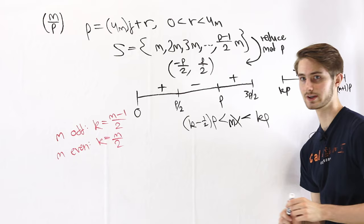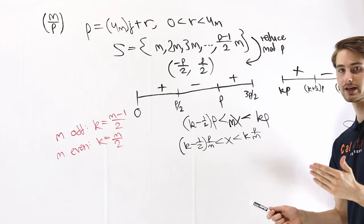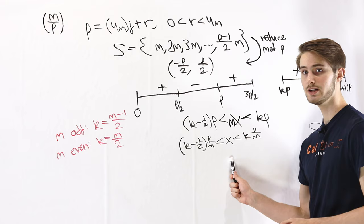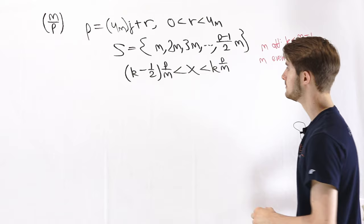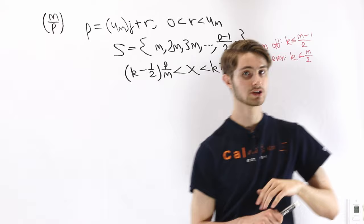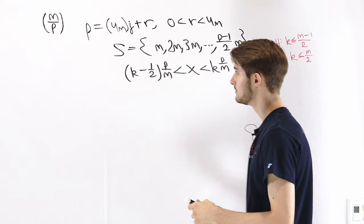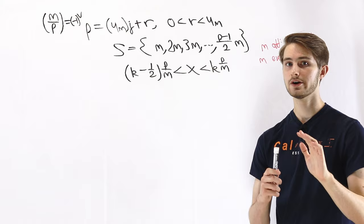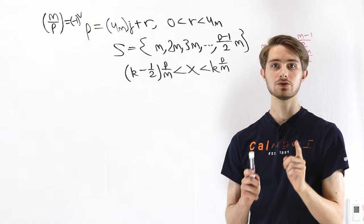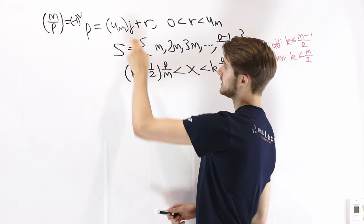Using Gauss's Lemma, whether m is a quadratic residue mod p depends on the number of integers x in a range for k between 1 and the upper bound that depends on m. Recall that the Legendre symbol (m/p) equals (−1)^v, where v is the number of negative values. Since we're computing (−1)^v, we only care whether v is even or odd.